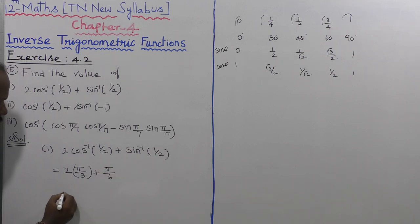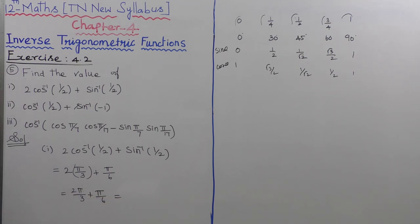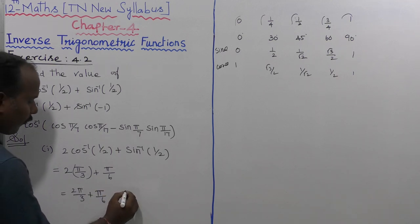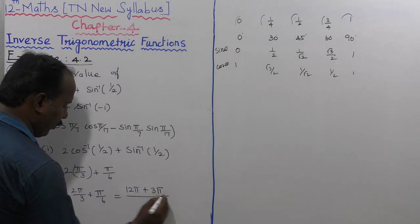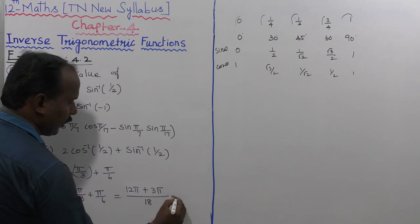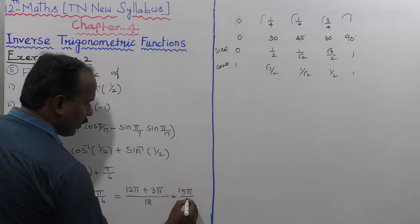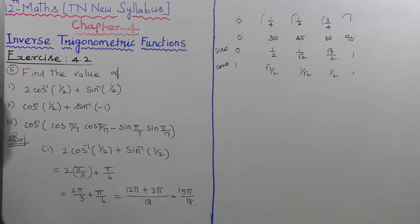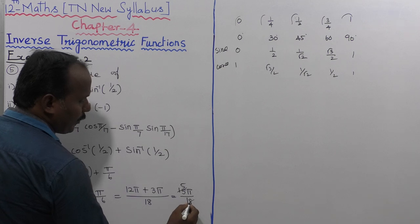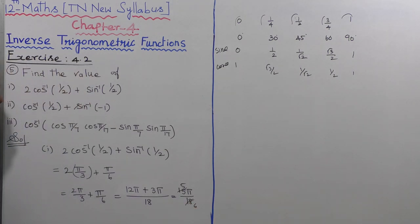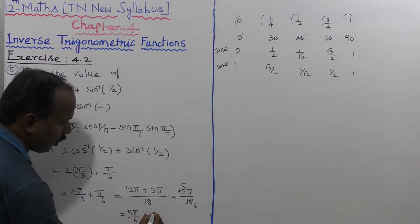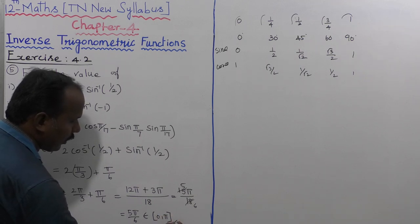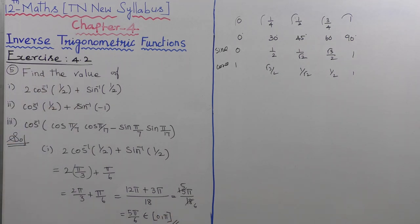Sin inverse of 1 by 2 is pi by 6. So 2 pi by 3 plus pi by 6 — multiply: 12 pi plus 3 pi, whole divided by 18, that is equal to 15 pi by 18, which simplifies to 5 pi by 6. This belongs to the closed interval [0, pi]. The first subdivision is completed, going to the second subdivision.